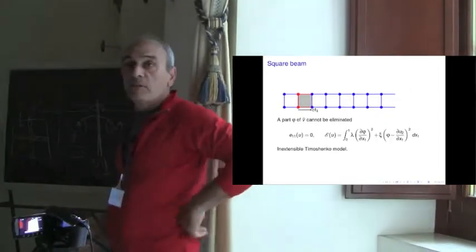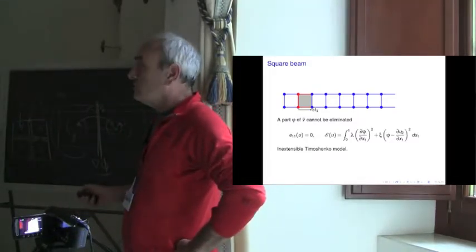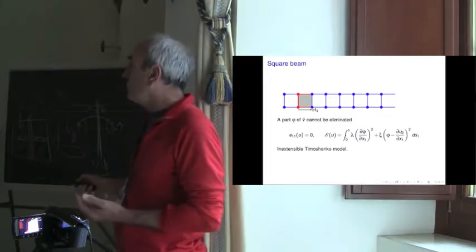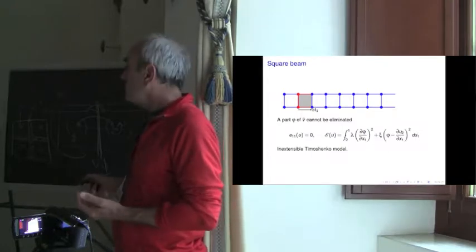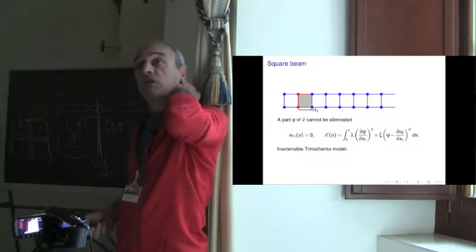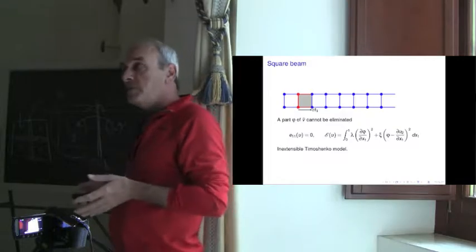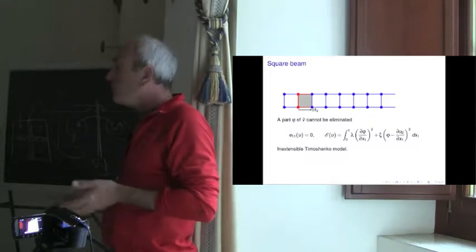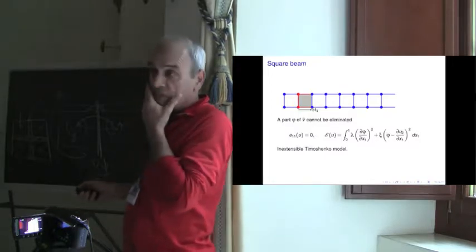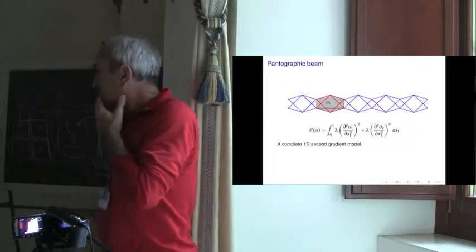Now, take the same beam and cancel the diagonal. What do you obtain? You obtain this model. V-tilde cannot be eliminated — some part of it remains, which I call phi — and then you get this model automatically. And what is that? This is an inextensible Timoshenko beam. The value of phi appears automatically from the homogenization procedure. It is what remains of V-tilde, which is the kernel of the constraint.